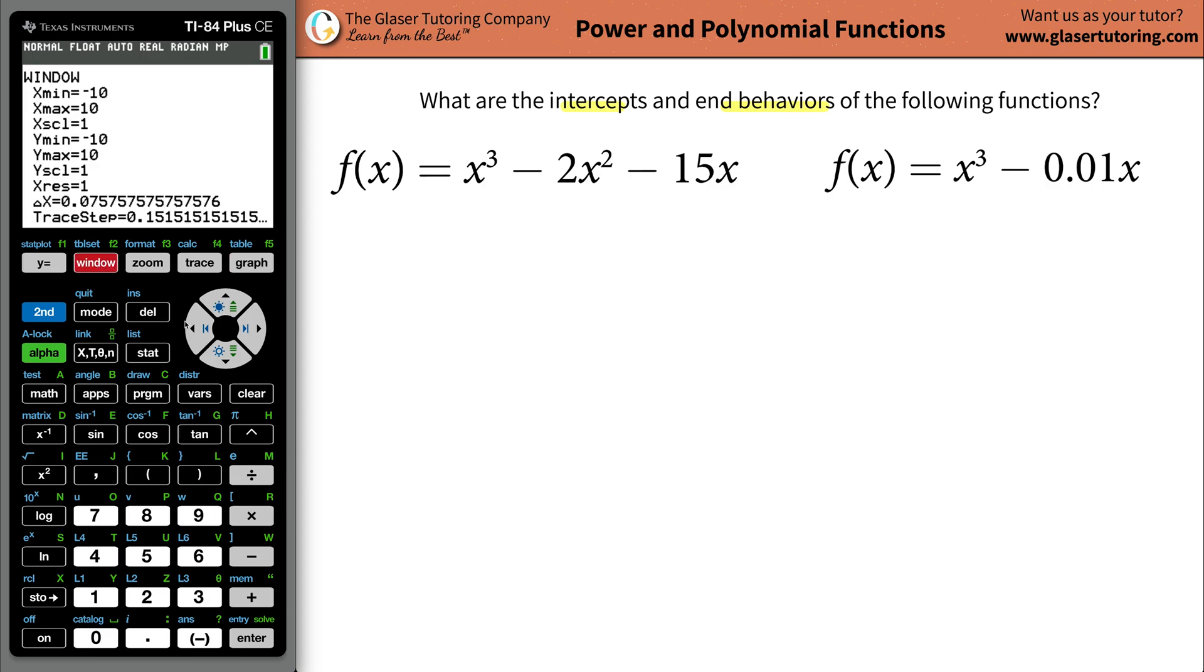I'm going to go to window. I'm actually going to change my x values. So let's go to negative 8, all the way up to 8. And then the minimum, let's go down to maybe negative 20 for the y, and then go up to 20. And we'll scale it by ones.